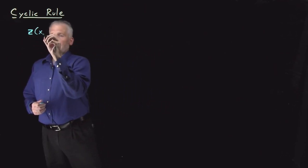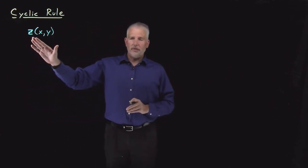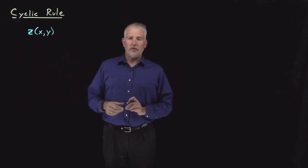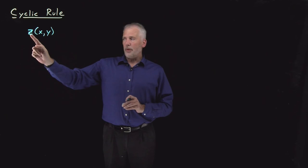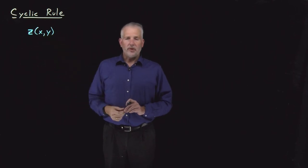So to derive the cyclic rule, let's start out talking about any arbitrary function that depends on two other variables. So I'll write it as z as a function of x and y, but we should be thinking about this as some thermodynamic variable, maybe the Gibbs free energy or the pressure or something else that depends on volume and temperature or any two other thermodynamic variables.